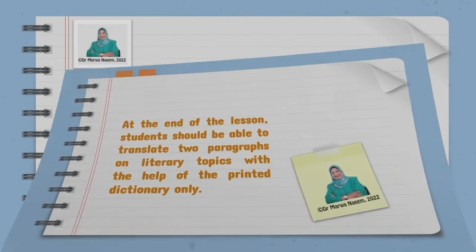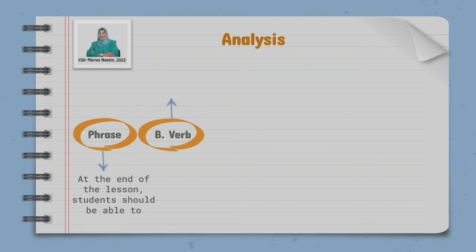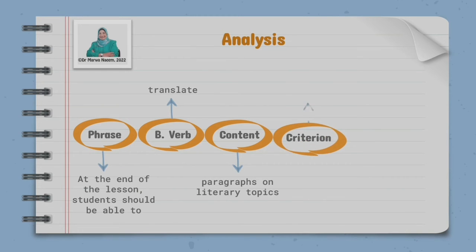Well, let's start analyzing. Again, the common phrase: at the end of the lesson, students should be able to. Then we have the behavioral verb, translate. Let's test it. Can I ask a question using translate? Yes, translate the following paragraph, translate these words, whatever. Then we have the content to be taught, paragraphs on literary topics. This is the academic content of the objective.